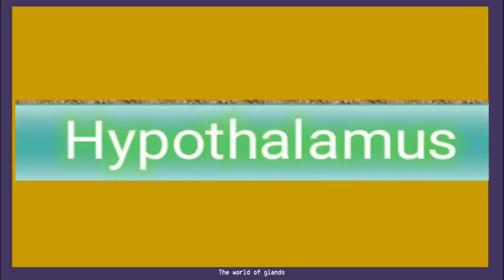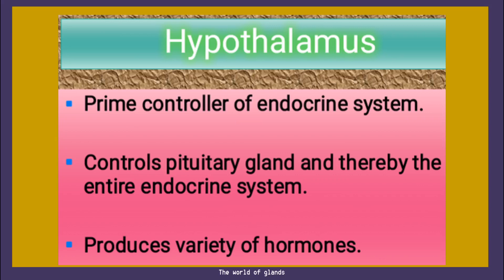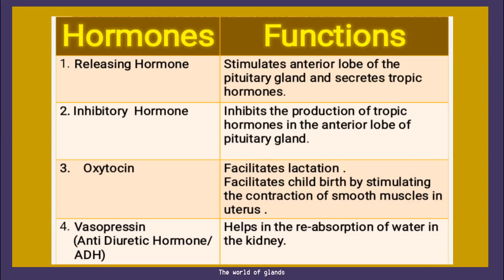Let's move to the last endocrine gland — hypothalamus. Here you can see the location of the hypothalamus. It is the prime controller of the endocrine system. It controls the pituitary gland and thereby the entire endocrine system. It produces a variety of hormones that have control over the entire endocrine system. Now let's see the hormones and functions produced by the hypothalamus — it produces four important hormones.